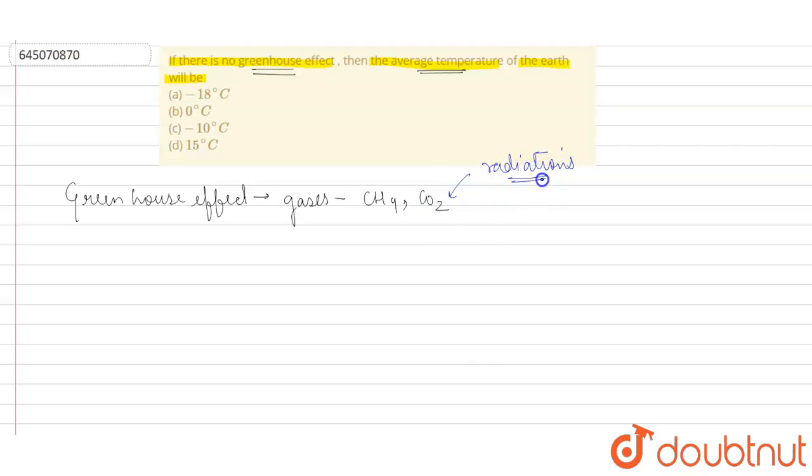As they absorb this radiation, they emit these radiations back. Some part of it helps in heating the atmosphere, and because of that there is a raise in temperature in the atmosphere.